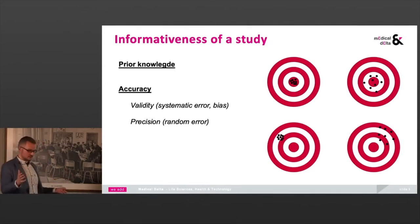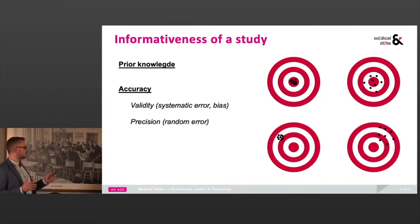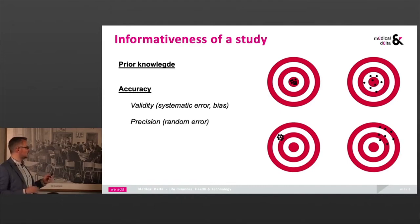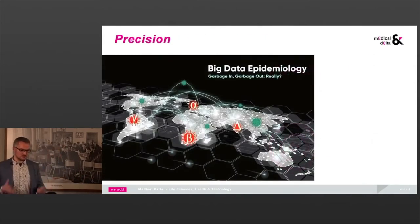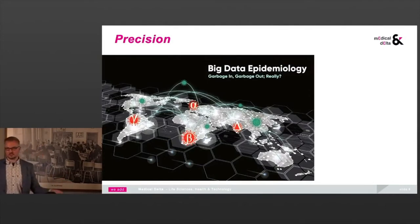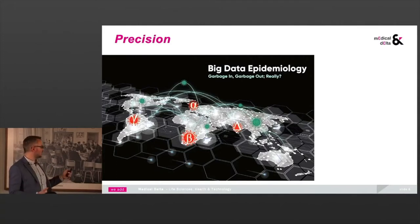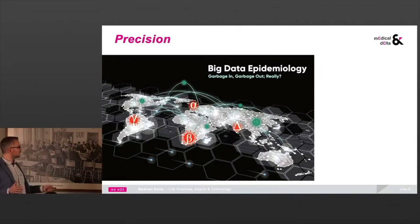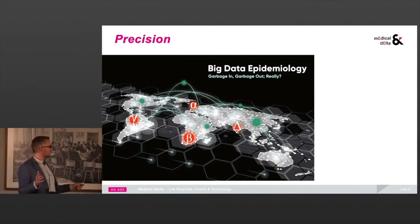In epidemiology, they already realized some years ago that big data doesn't solve this problem. There's a saying: garbage in, garbage out. Even if you collected millions of samples with COVID, with dementia, or with your clients on your website, if the data design is not good and you have bias, the precision can be quite good but you can still have off results. That's why more data doesn't solve this problem.